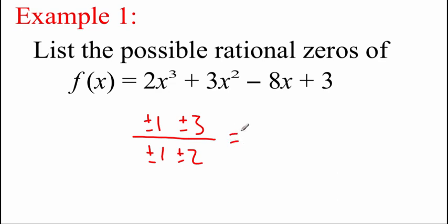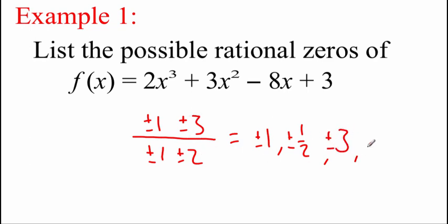We separate out all of these fractions: 1 divided by 1 is plus or minus 1; 1 divided by 2 is plus or minus one-half; 3 divided by 1 is plus or minus 3; and 3 divided by 2 is plus or minus three-halves. So there are 8 possible zeros. Based on our linear factorization theorem, since this is a cubic, only 3 of these would actually work — we would have to run through synthetic division to see which 3 actually do work.